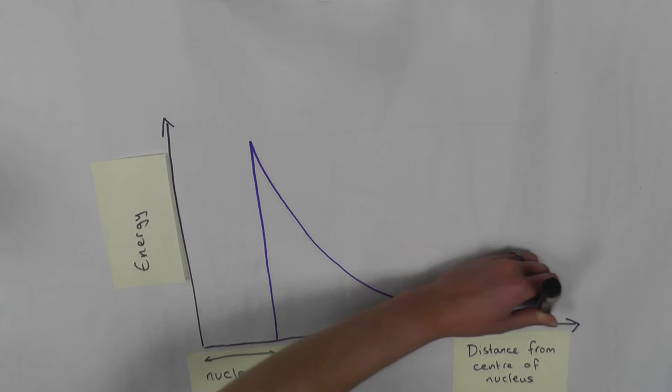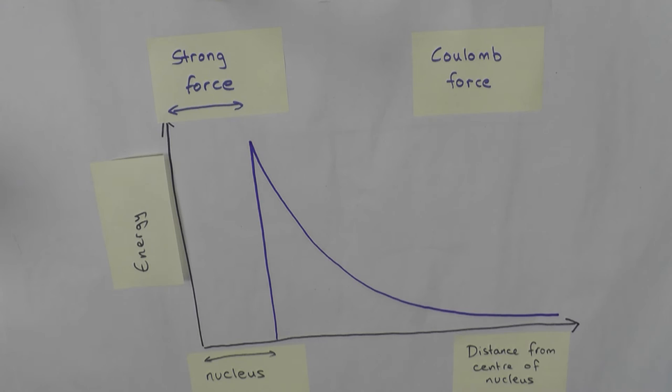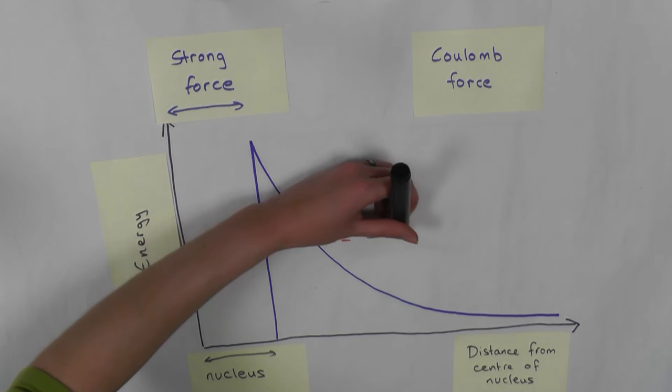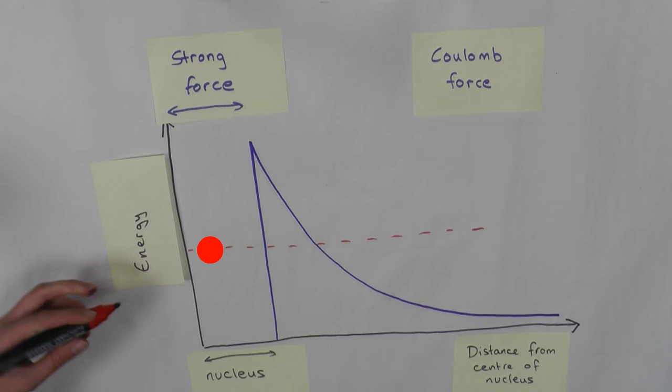Now, how would an alpha particle behave in such a situation? The red dotted line represents the energy of the alpha particle. Classically, the alpha particle would never escape from the nucleus as it wouldn't have enough energy to overcome the Coulomb repulsion barrier.